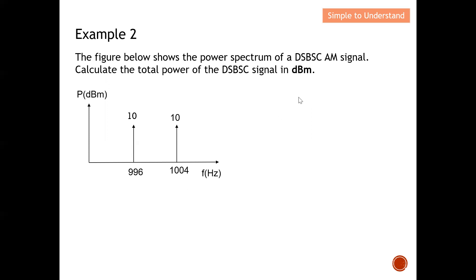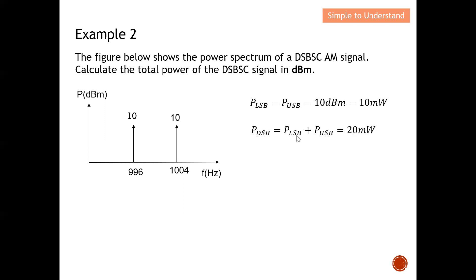So firstly, the given value is 10 dBm. I convert it into ratio, which is 10 milliwatts. This means the lower sideband is 10 milliwatts and the upper sideband is also 10 milliwatts. Hence the total power is 10 plus 10, which is 20 milliwatts. The question asks for dBm, so I convert 20 milliwatts into dBm, which gives 13 dBm.